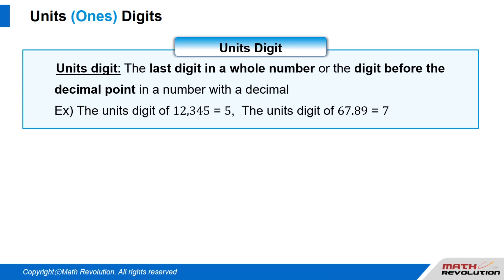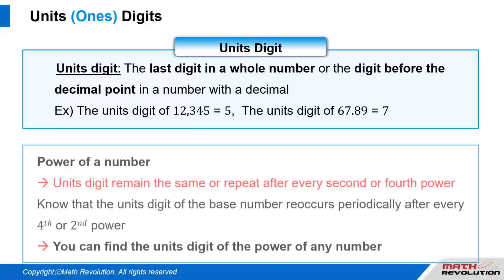The units digit is the last digit in a whole number, or the digit before the decimal point in a number with a decimal. For example, the units digit of 12,345 is 5, and the units digit of 67.89 is 7.